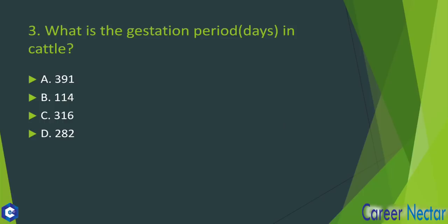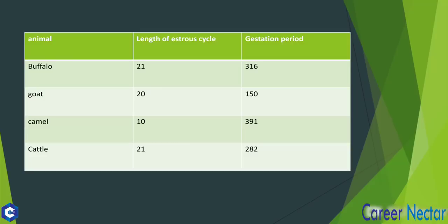What is the gestation period in the case of cattle? The answer is 282 days. I am going to add the whole chart of buffalo and other important livestock in this video. For buffalo, the estrus cycle length is 21 days; goat is 20 days; camel is 10 days; and cattle is 21 days. The gestation period of cattle is 282 days, so the answer to this question is option number D.